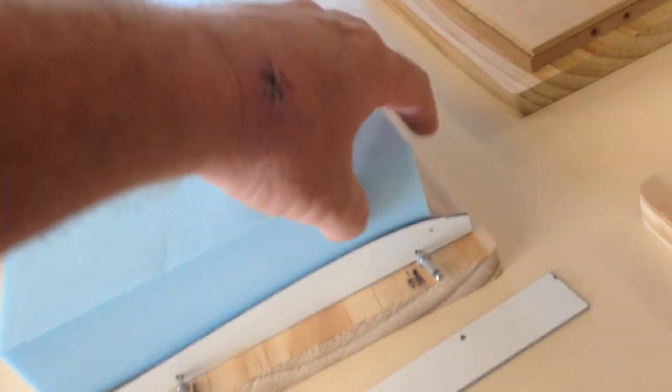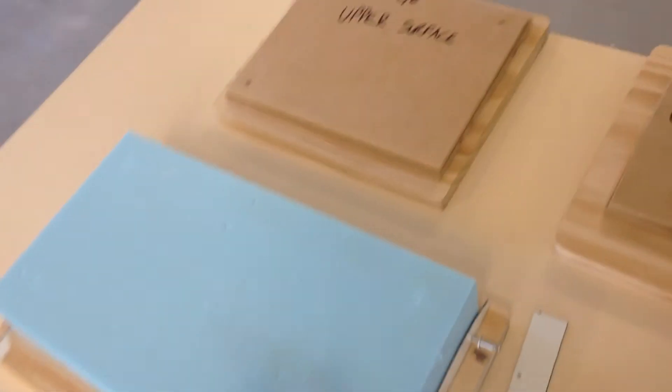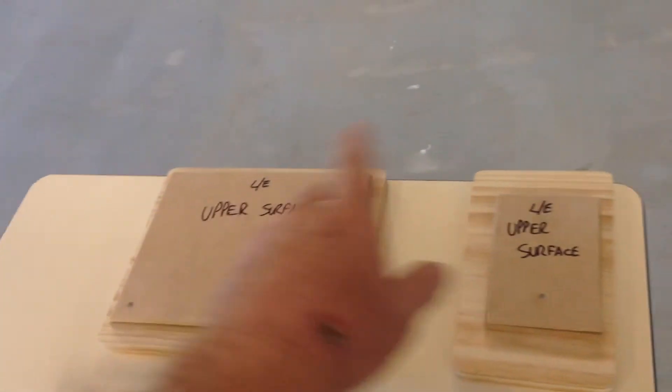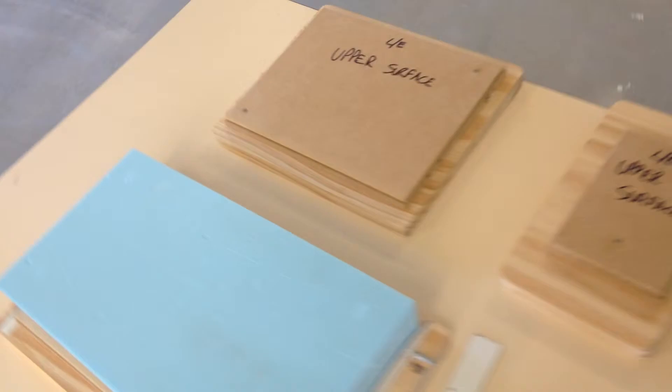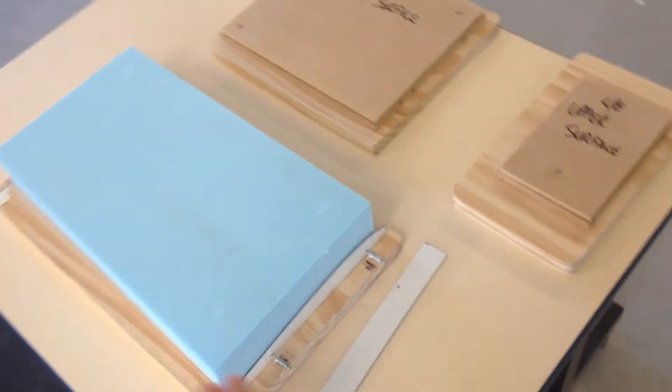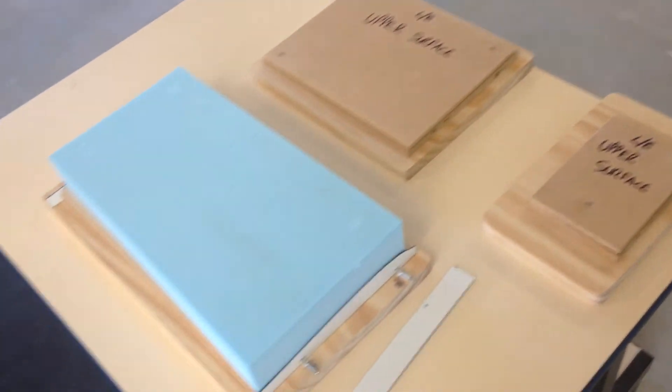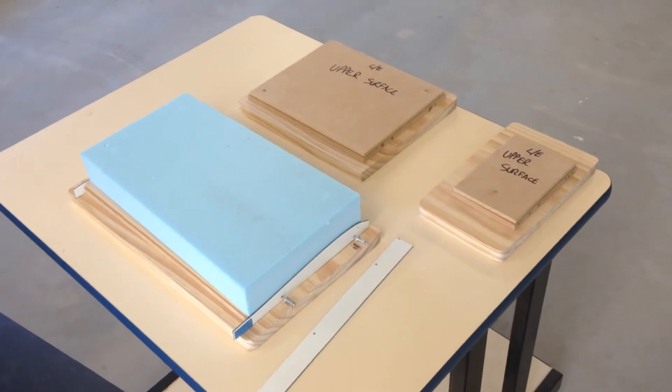So that's it. You can set them all up ready to go, and then just cut one, two, three if you're doing one wing. Or if you want to do a couple of wings at a time, you can just keep running through the stack and keep going. So that's it, any questions?